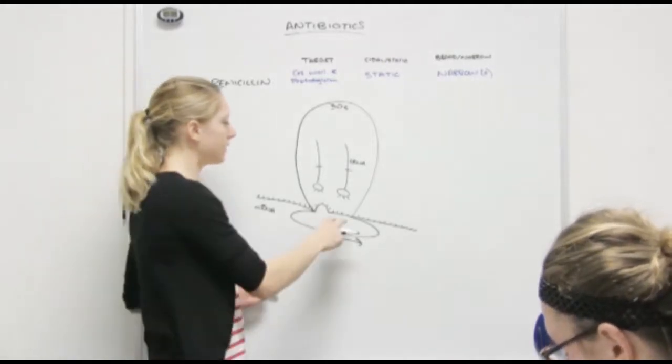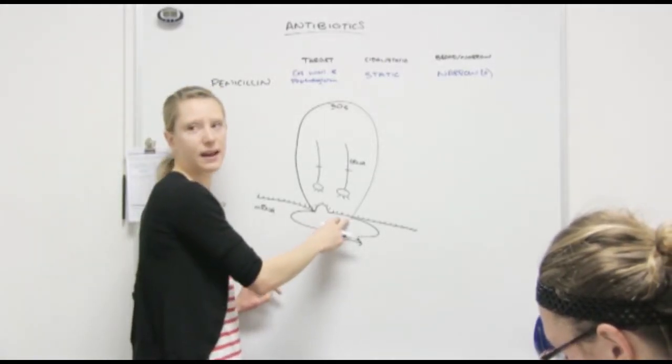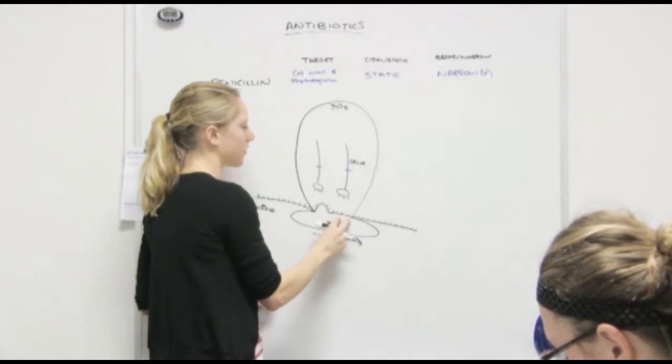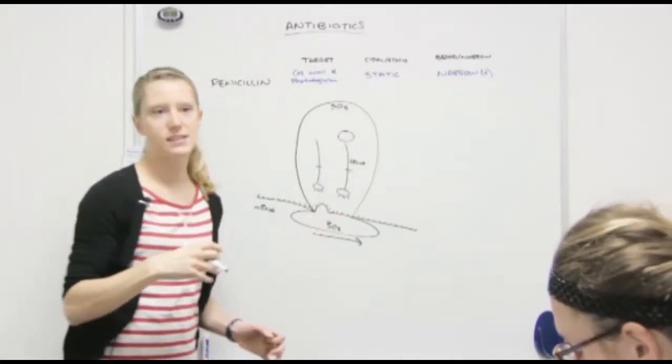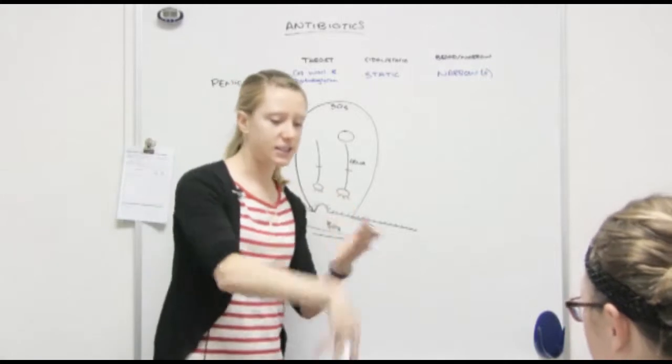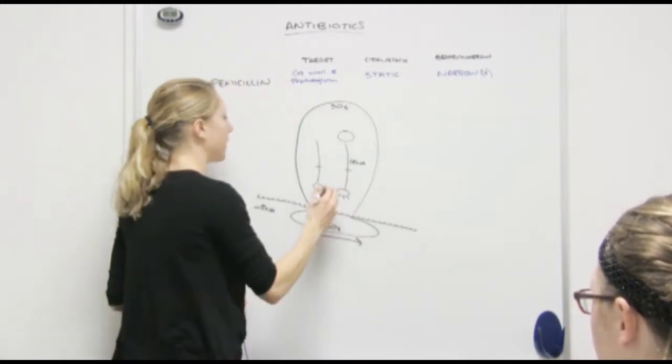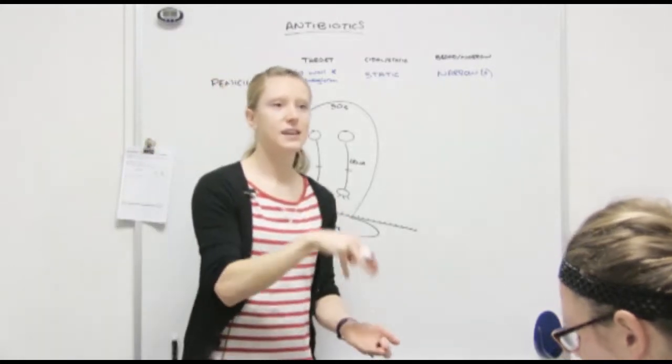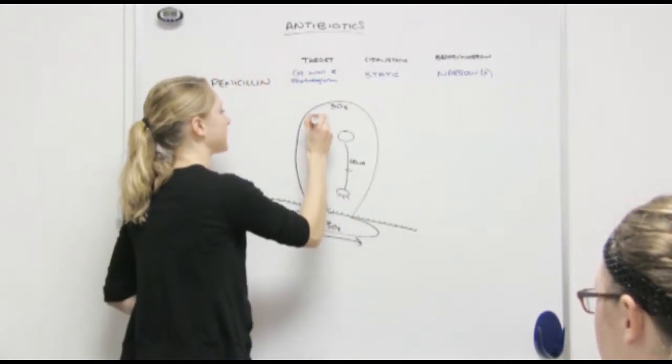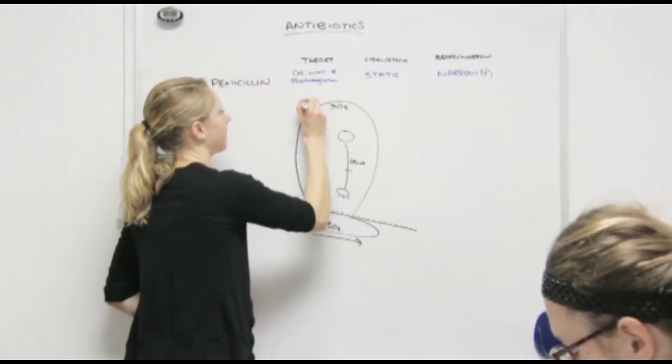So the tRNA will attach to the mRNA and it will be like, oh, this code right here means this amino acid. Okay? And it attaches it. And then it moves. It attaches, reads, oh, that part means this amino acid. And then it will move, attach, oh, now it wants this amino acid. And it will keep doing that until I have a long chain.